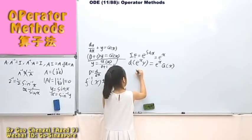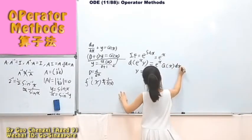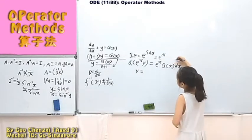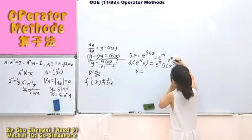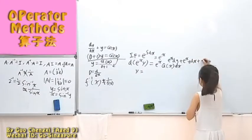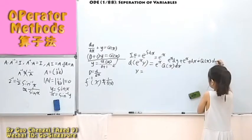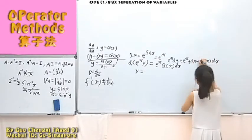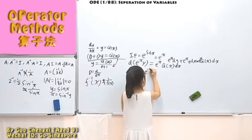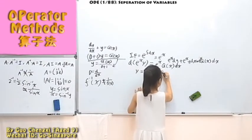Then if we integrate both sides and move terms over, let me give an extra step. Here it becomes e to the power of x dy, plus e to the power of x times y dx, equals q(x) dx. Basically, if we integrate both sides, we get e to the power of x times q(x) dx.